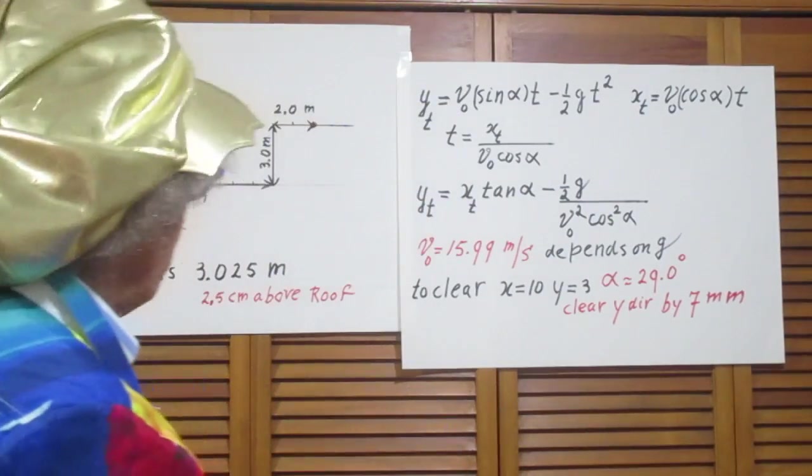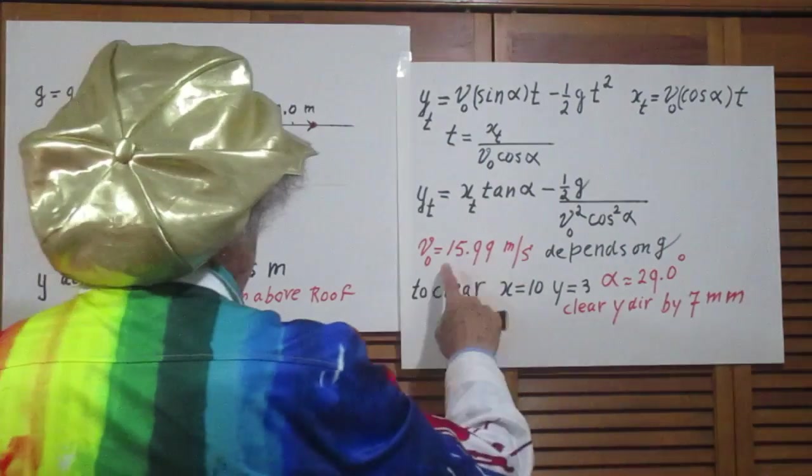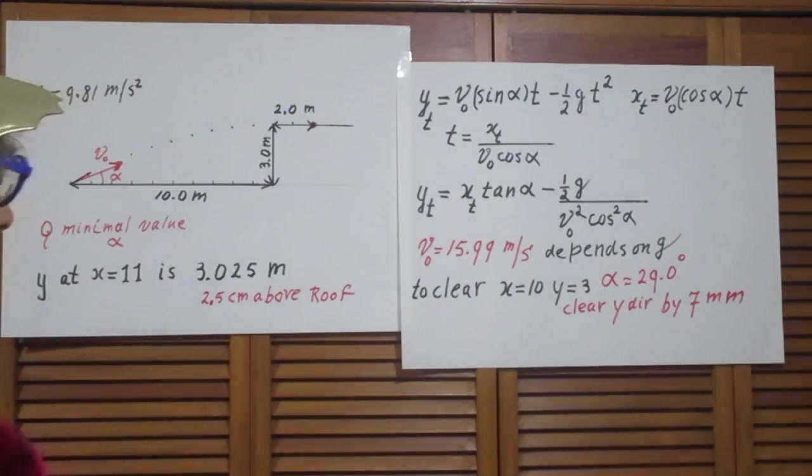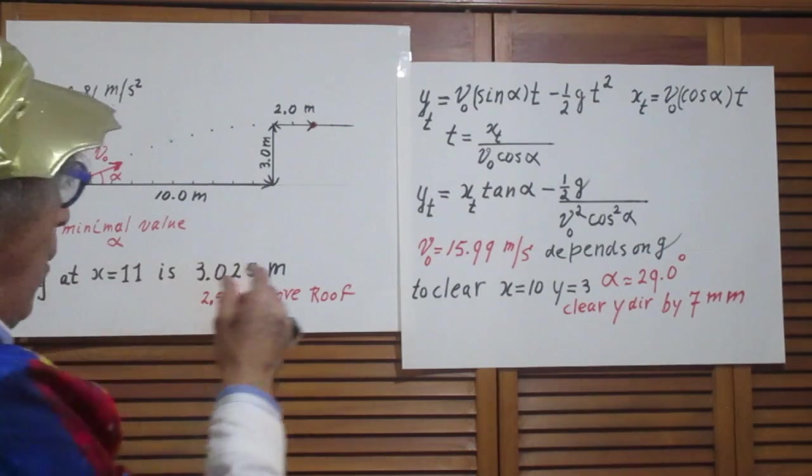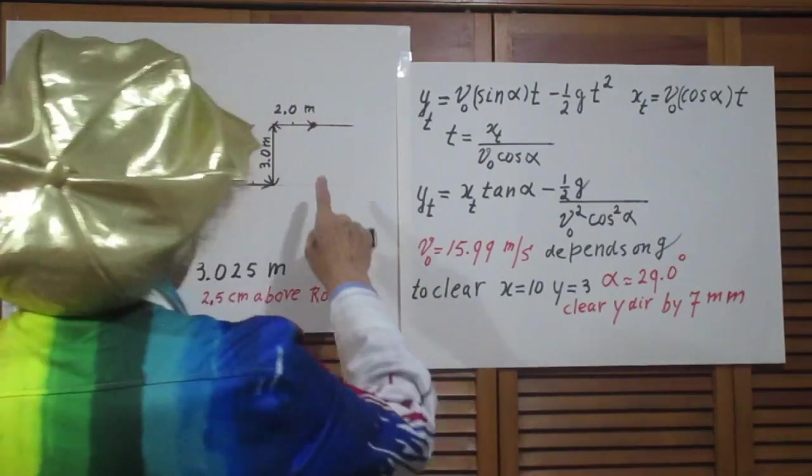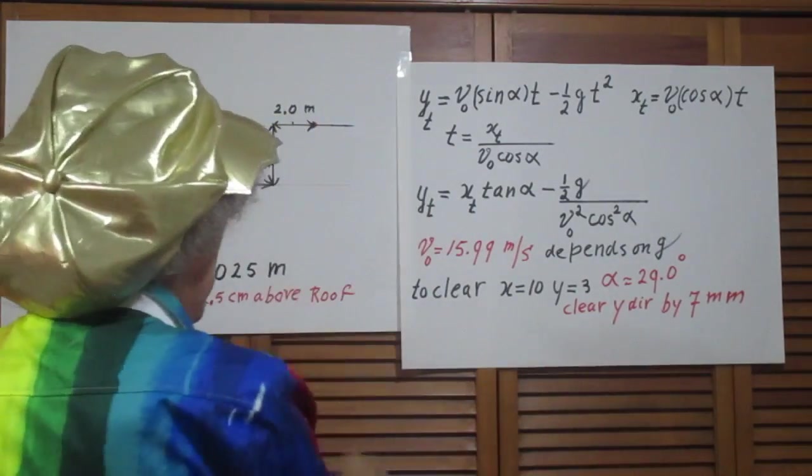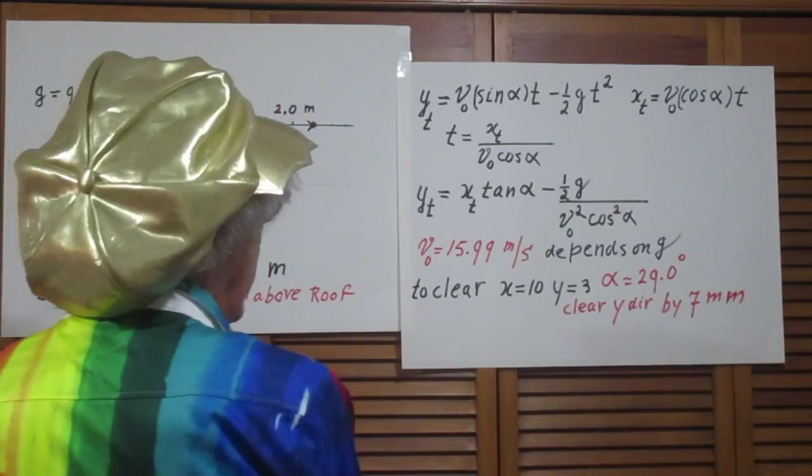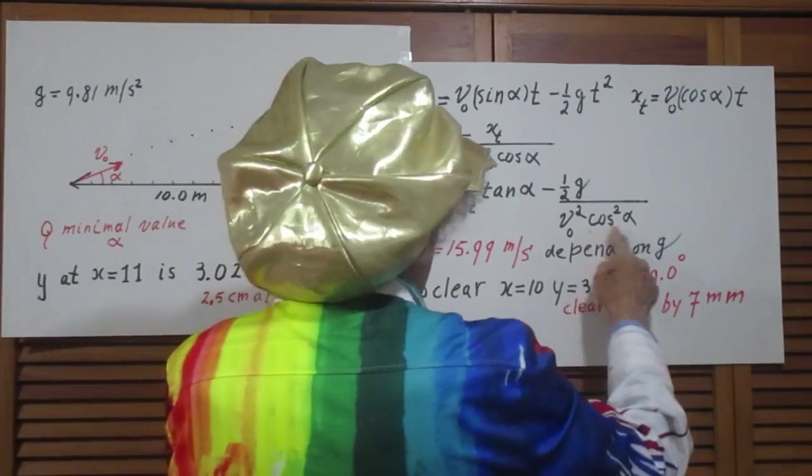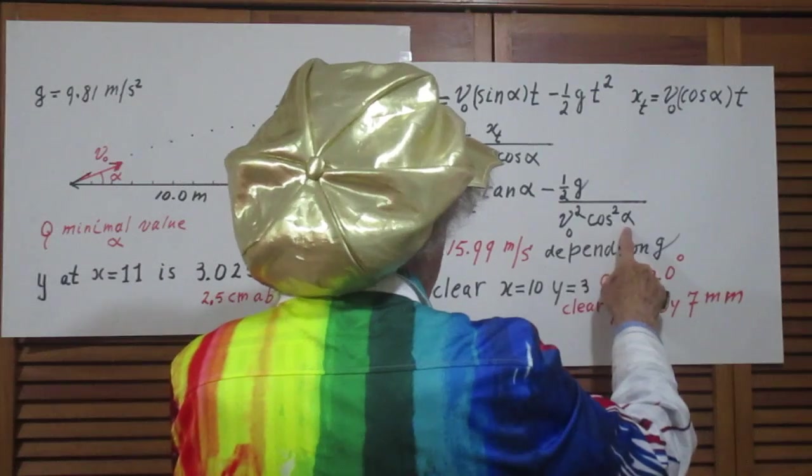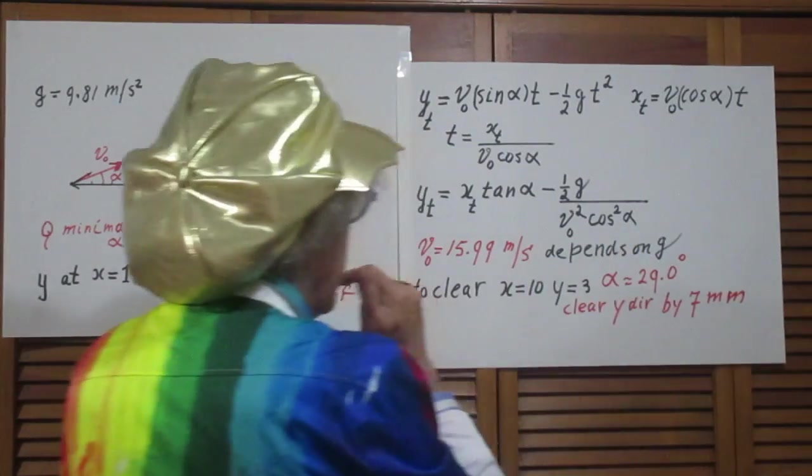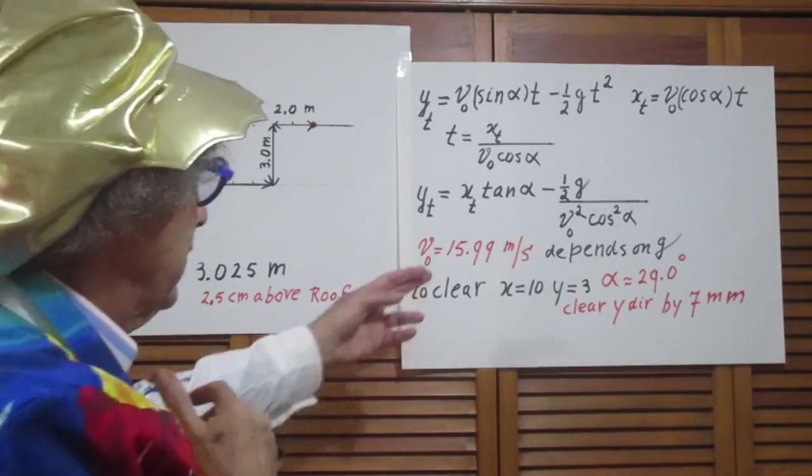This is one equation with one unknown, that is v0, provided that you use my g of 9.81. And so you will find then that it is 15.99 meters per second. Yeah, isn't that interesting? You know y at that point, you know x at that point, you know the tangent of alpha because we calculated that. Alpha is 28.8 degrees, so you find immediately v0 squared and so you find v0.